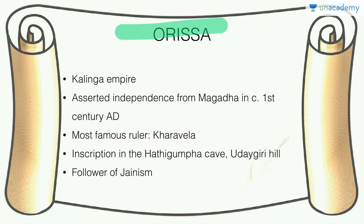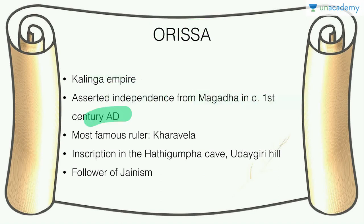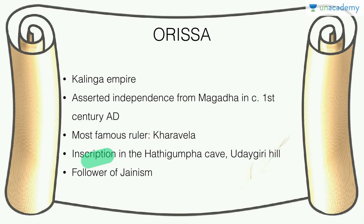Orissa was the Kalinga Empire, which asserted its independence from Magadha in the first century CE. Their most famous ruler was Kharavela. We know about him through the inscription in Hathigumpha Cave on Udayagiri Hill. He was a follower of Jainism.